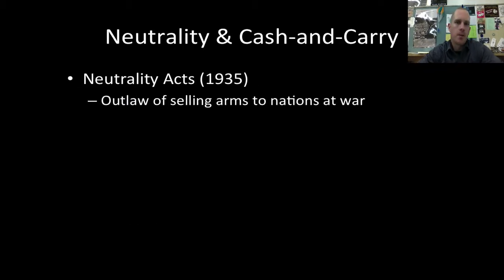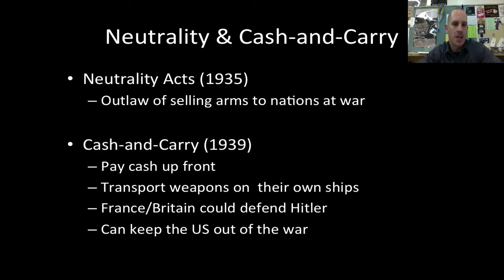So neutrality and cash and carry. The Neutrality Act passed in 1935 — we talked about it briefly in the last screencast. Basically what it does is outlaw the selling of arms to nations that are at war. We're trying to move away from the Neutrality Act itself by 1939.